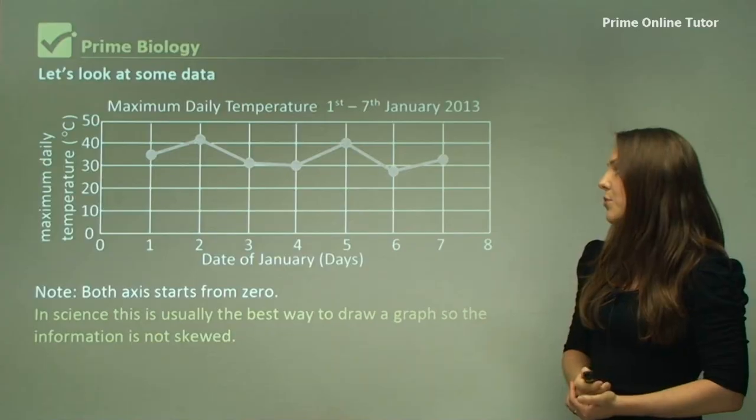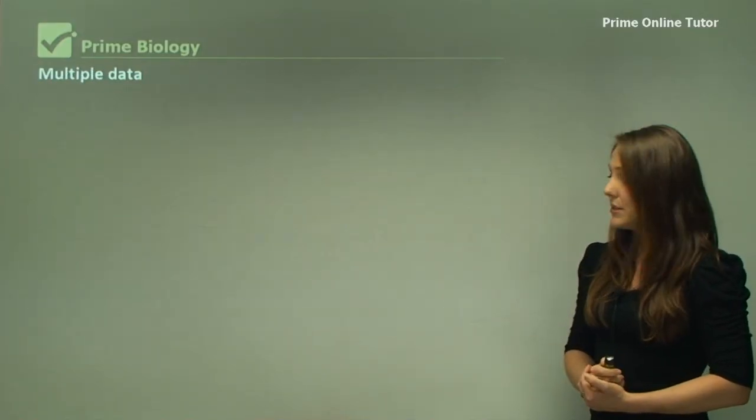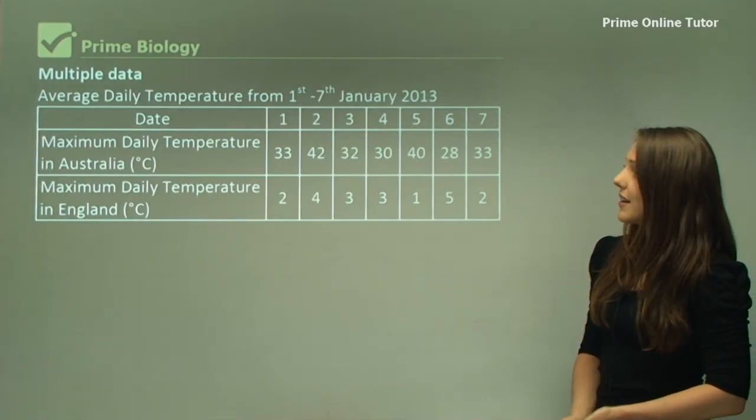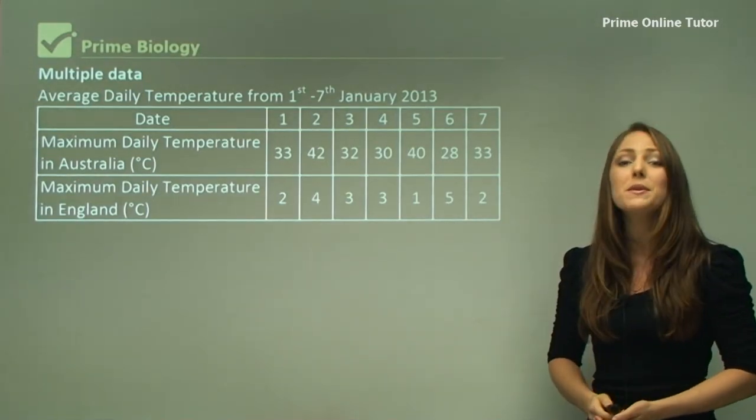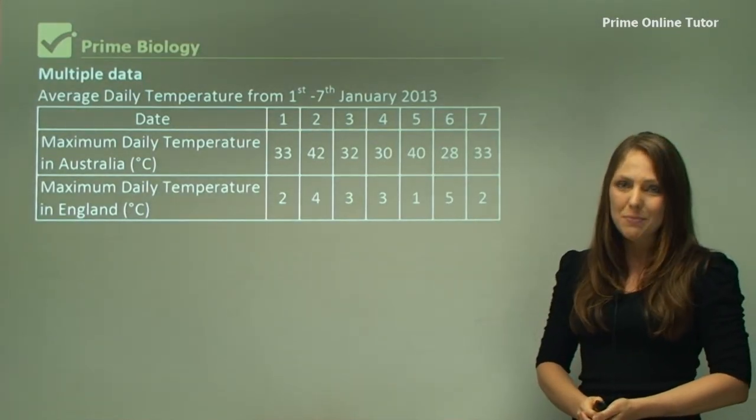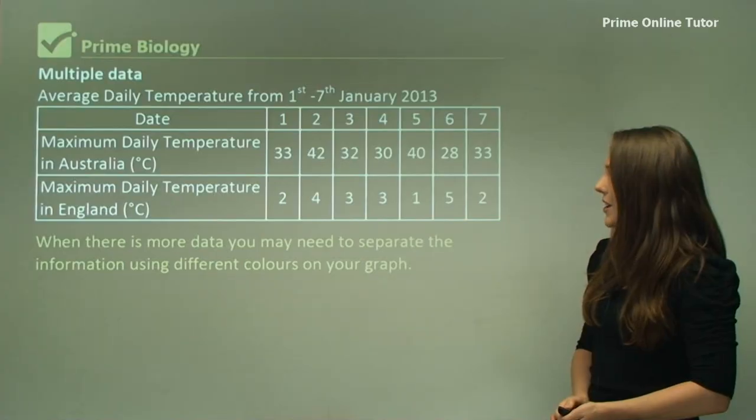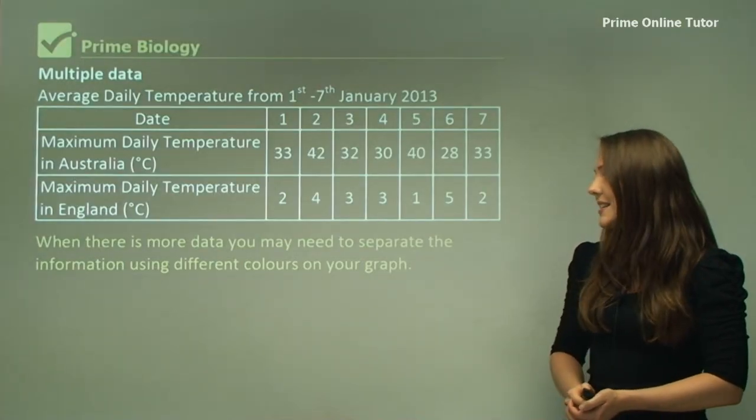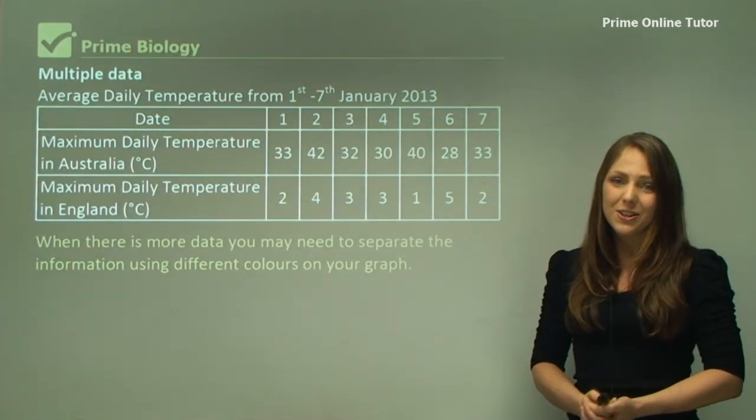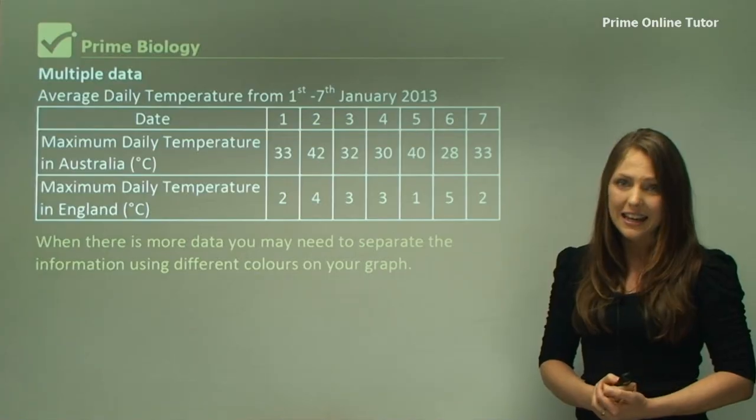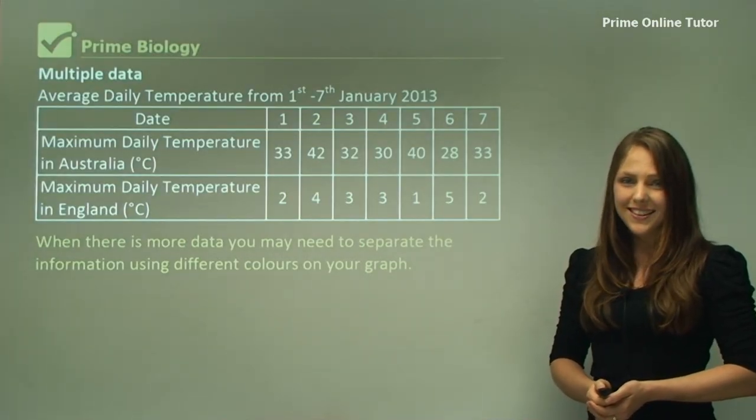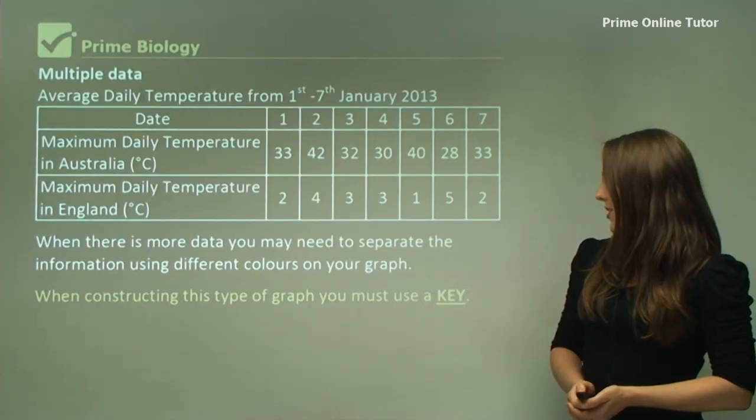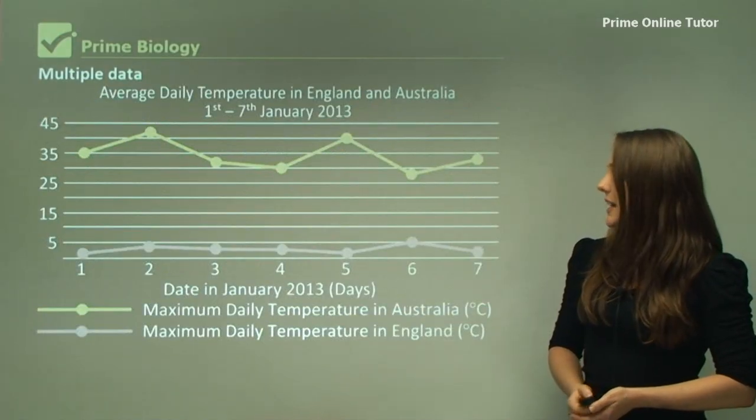Multiple data now. I'm going to compare Australia with England. Again, these are made-up values but very typical of England's climate in January. When there is more than one data set, you may need to separate the information using different colors on your graph and include a key. You can have a go at this now and press pause.